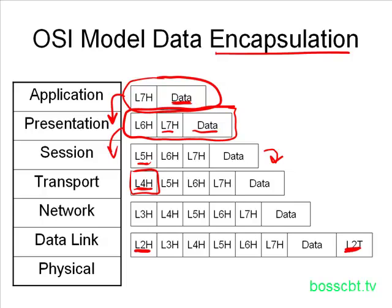Now we have one more layer to go, but the physical layer does not add a header or a trailer. It doesn't add anything, because this is the layer where the information is going to be sent across the physical network. So this is the process of encapsulation where headers are added at each layer — inside the header is some control information — and at each layer, after a header is added, you have a protocol data unit.